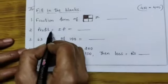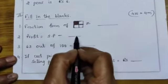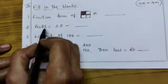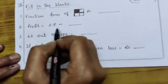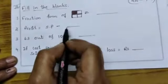Second bit, profit is equal to S P minus dash. What is the form of profit? S P minus, write it in the dash.